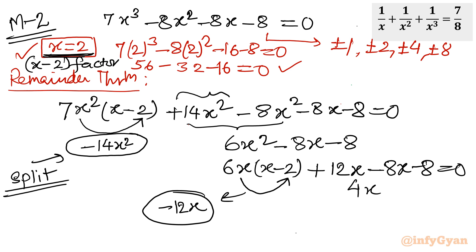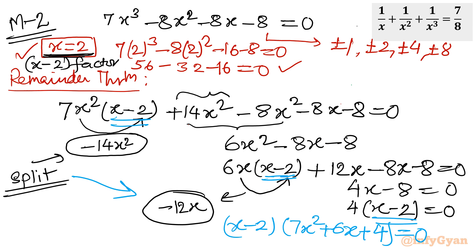Now this is 4x minus 8 equal to 0. Remaining term as it is, you will take 4 also common, x minus 2 equal to 0. Consider this x minus 2 common out from all the three terms. This term we will take from here, from here, and from here. So I can write x minus 2 in bracket, 7x square plus 6x plus 4. Same factorization using remainder theorem. And reminder: this split is there, minus 14x square and minus 12x.